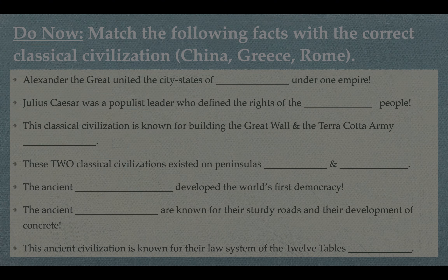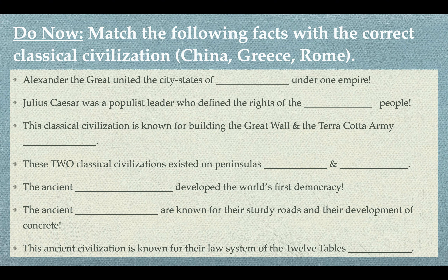Before you play the Kahoot, we are going to be doing a little fill-in-the-blank do now. Unit four was a combination of what we call classical civilizations — those included China, Greece, and Rome. They were all part of the same unit, but we broke them down and studied them separately. However, because these civilizations existed at the same time in history, they did share a lot of similarities but they also were different in some ways. You are going to fill in each of these sentences with the correct civilization.